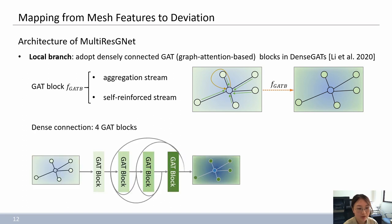In total, there are four GAT blocks with dense connection pattern in the local branch of our network.